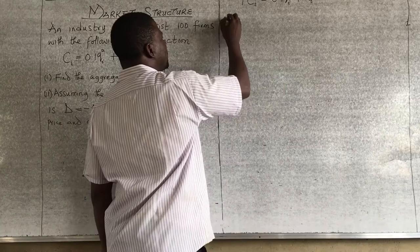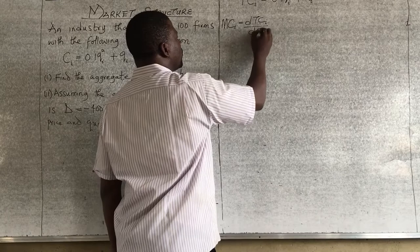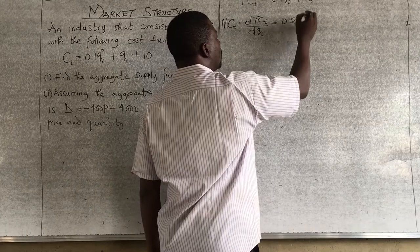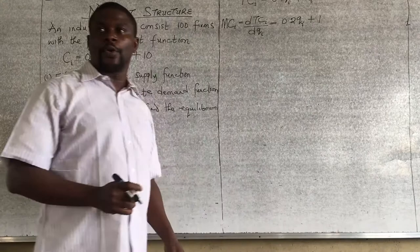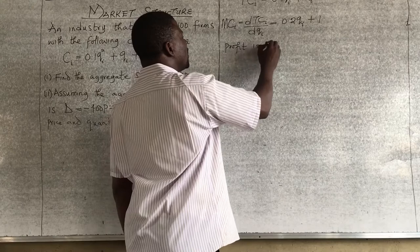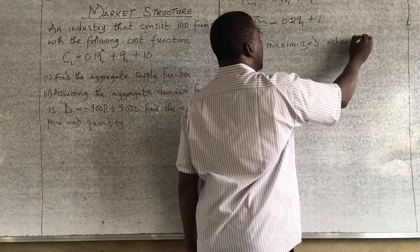Let's find our marginal cost. MC means we differentiate the total cost with respect to Q. So, differentiating: 2 times 0.1 gives 0.2Q_i, plus differentiating Q_i gives 1, and differentiating 10 gives 0. Don't forget, profit is maximized when MC equals P.